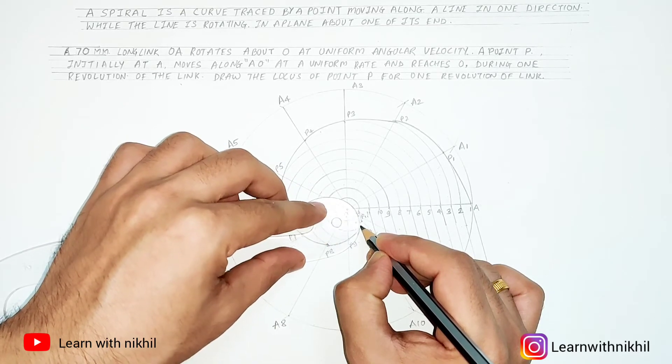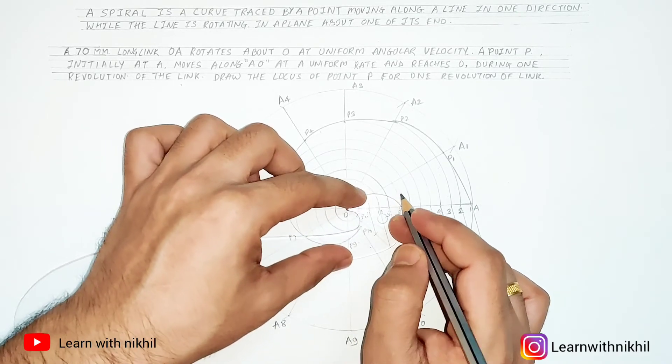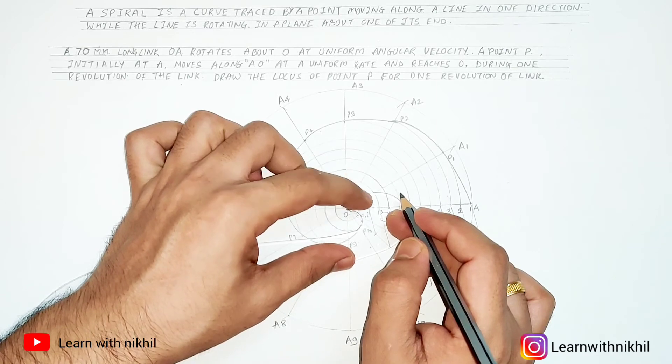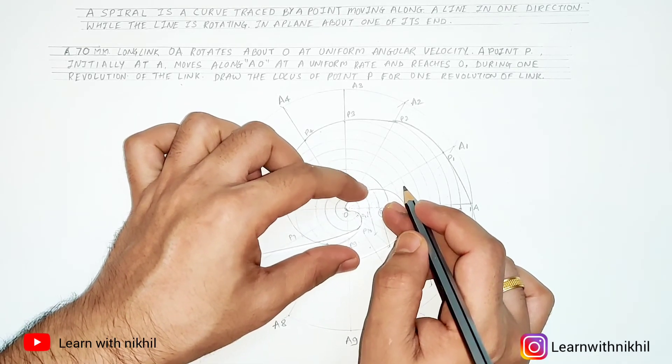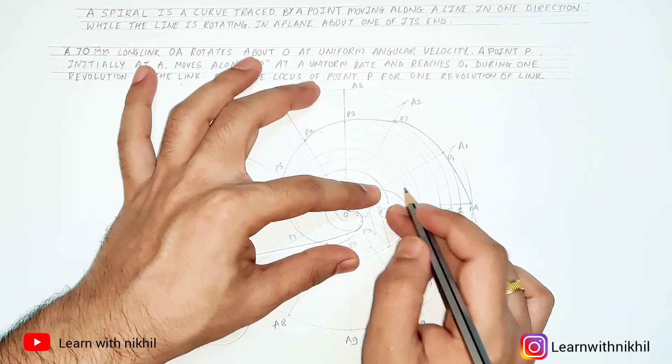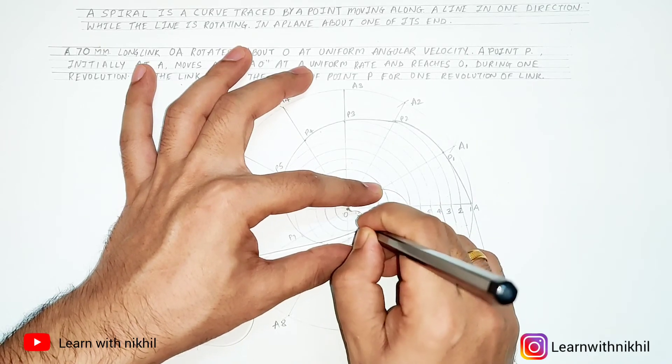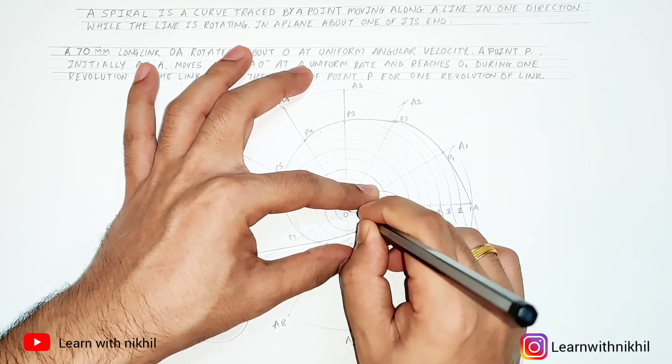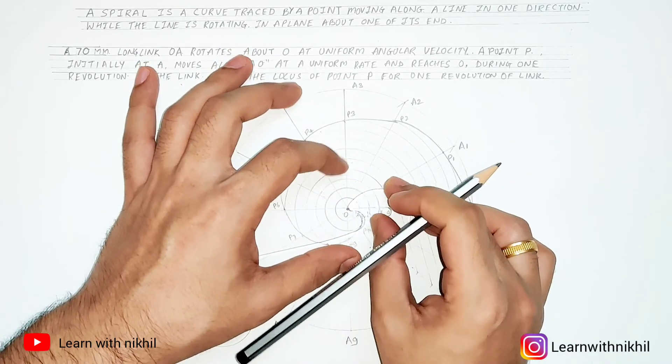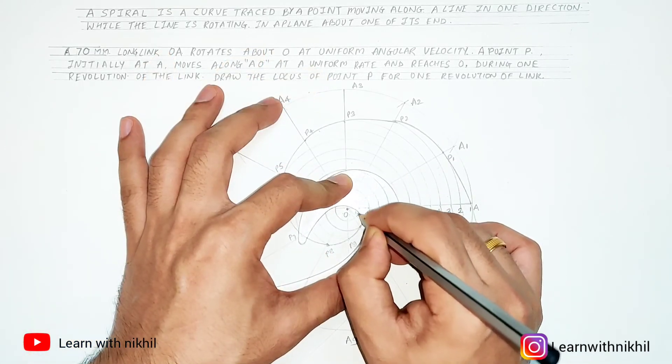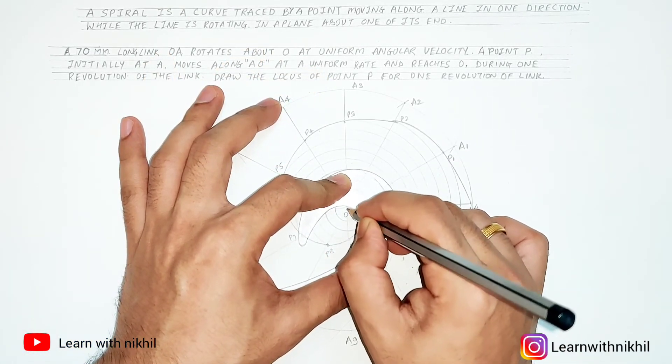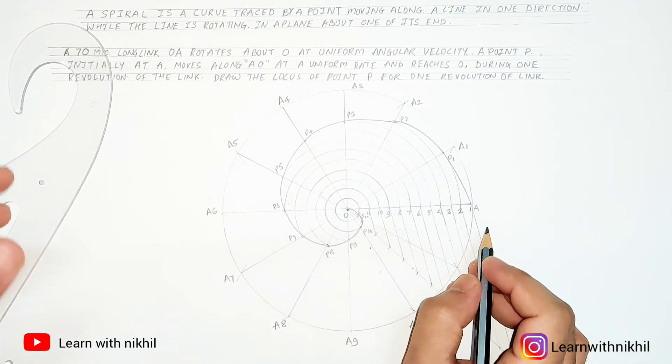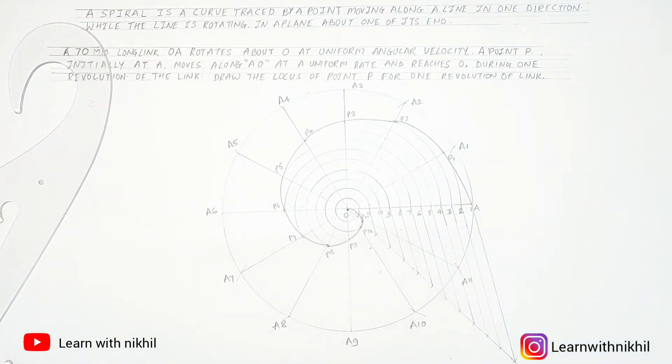You can move the French curve as you want. Just try to align three or more than three points. Don't just try to align two points. Try to find three or more than three points, then only you will get a smooth curve. So this curve which is formed is called as a spiral.